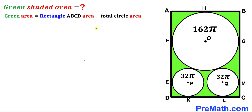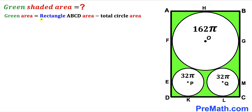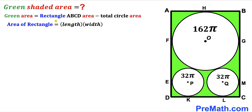Let's get started. The green shaded region area equals the rectangle ABCD area minus the total circle area of the three given circles. Our task is to calculate the area of rectangle ABCD. Recall the area formula: area equals length times width.